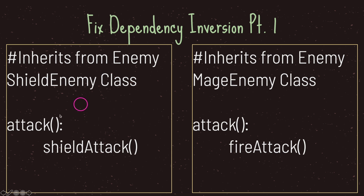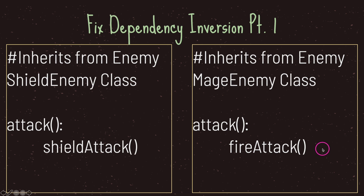Our shield enemy class overrides the attack function and inside it we put our local shield attack — that's how we create the abstraction. The abstraction comes from the fact that when a class instance object is created, it has a method that other classes can call without needing to care about what's inside. Similarly, the mage enemy class also inherits from the base enemy class and overrides the attack function with the fire attack. This way, other classes using these instance objects have a function to call without caring about the internal details.